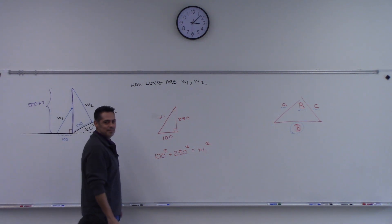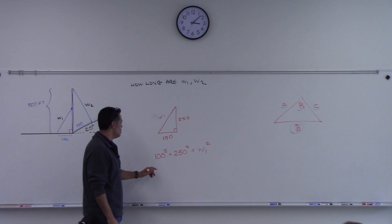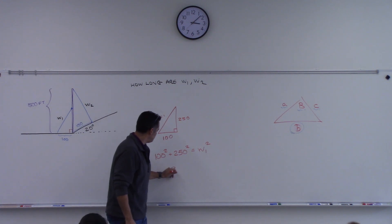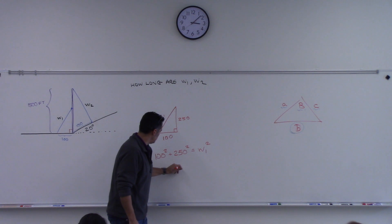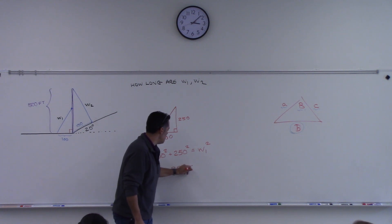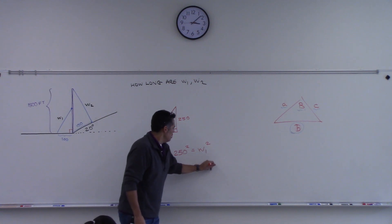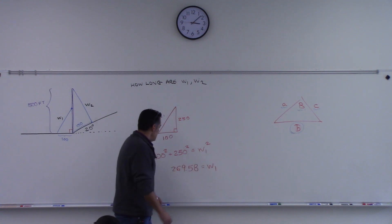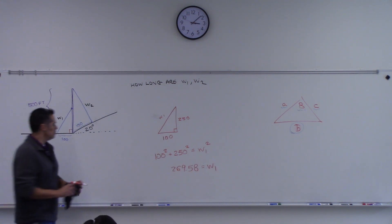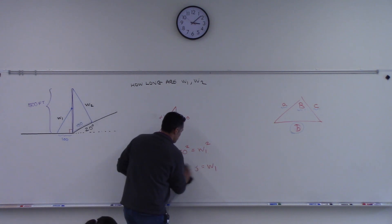I got a decimal. What did you get? I got 269.258. Let's just say 269.3. Anyone else get that?